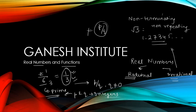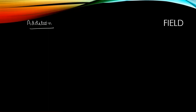Now, what we are going to study under the category of real numbers and functions are the properties of real numbers. In real numbers, let's take two operations: addition and multiplication. These are mathematical operations and there are some properties of real numbers associated with them.